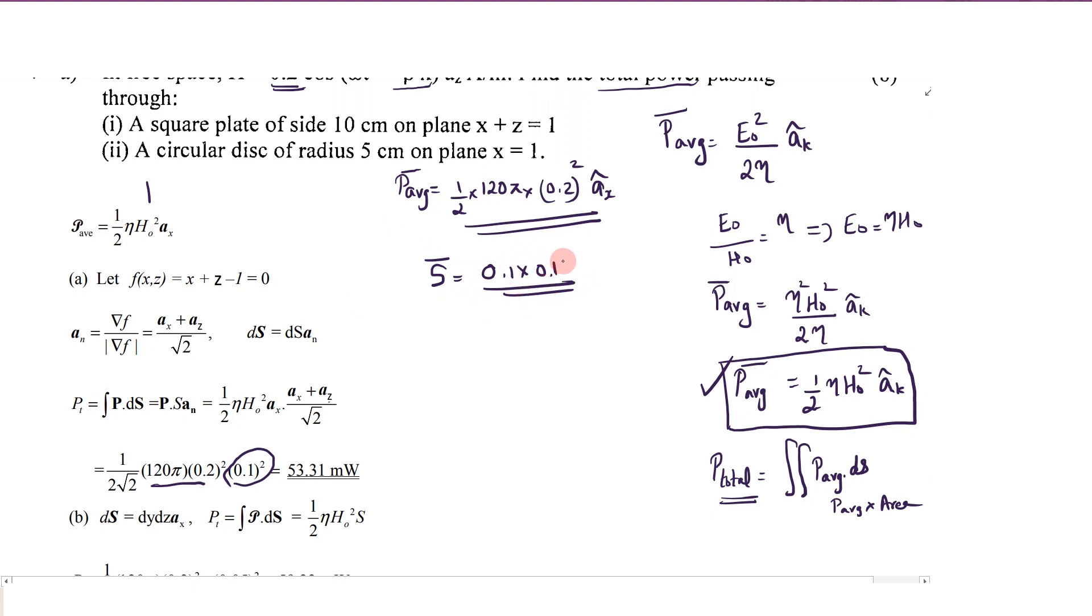Then you need to add, this is the magnitude only, into unit vector an. You have to get a unit vector normal to the area. When the plane equation is given, you can take that equation as f as a function. So x plus z equals 1 is the equation of plane. Here you can take it as x plus z minus 1, let that be function f.